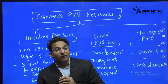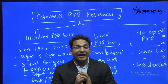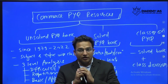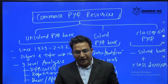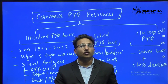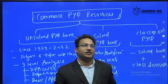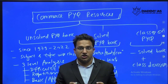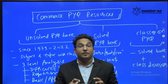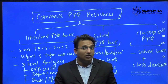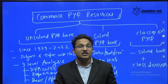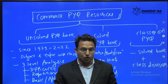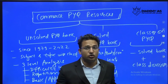Hello everyone. For Commerce optional in IAS and IRMS, one key thing is the repetition of previous questions. A lot of questions are repeated almost every year — 60 to 70 percent of the paper is repeated. So you need a source where you can refer to previous questions topic-wise and subject-wise, and also get solutions to those previous questions.